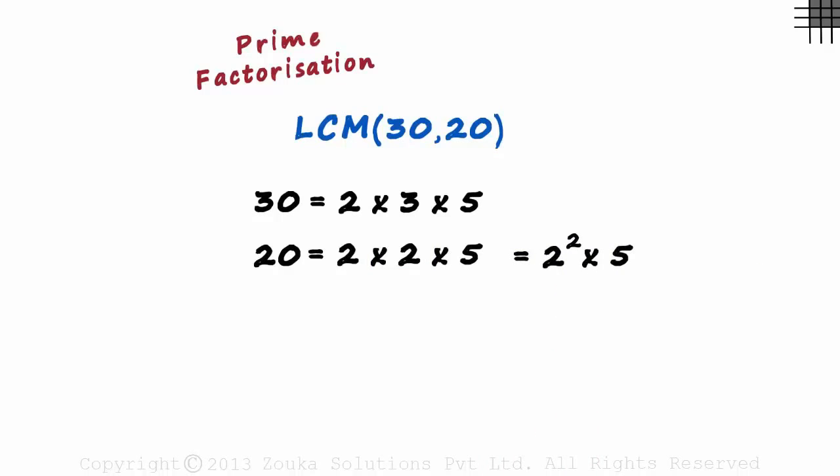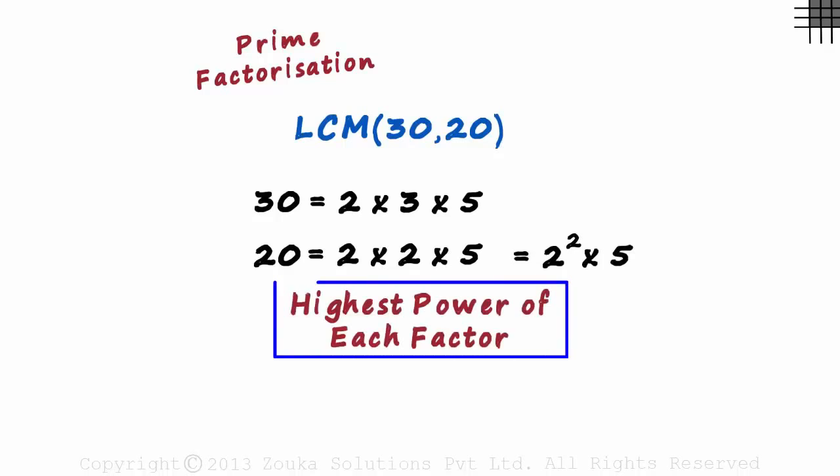To find the LCM, we have to multiply the highest powers of each factor. There are three factors to be considered here: 2, 3, and 5.